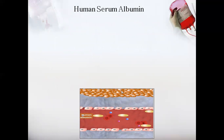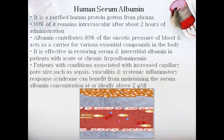Human serum albumin is a purified tissue protein obtained from plasma. About 90% of it remains intravascular after two hours of administration. It contributes 80% of the oncotic pressure of blood, acts as a carrier for various essential compounds, is effective in restoring serum and interstitial albumin, and also helps maintain serum albumin concentration for protein-binding drugs.